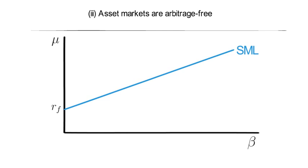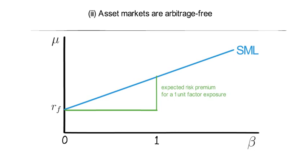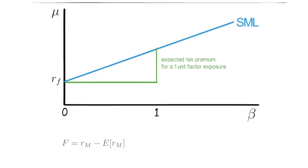In the graph, factor sensitivity is on the x-axis and expected portfolio return is on the y-axis. A portfolio with a zero beta pays the risk-free rate. The slope of the security market line coincides with the expected risk premium of the systematic risk factor. If you choose the factor to coincide with R_M minus the expectation of R_M, then the expected return of a well-diversified portfolio equals the risk-free rate plus beta of the portfolio times the expected risk premium of the market — which coincides with the CAPM-implied security market line applied to a portfolio.